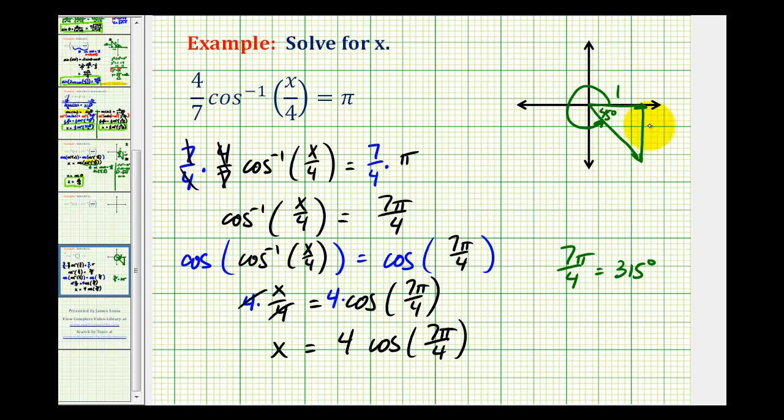We can label this side one, this side negative one, and the hypotenuse square root two. The cosine of seven pi over four radians or 315 degrees is positive one over square root two.